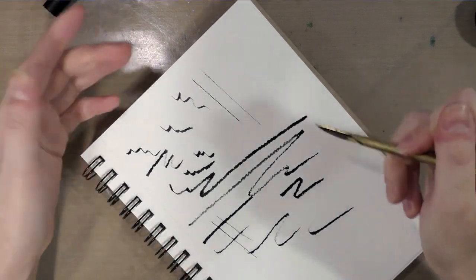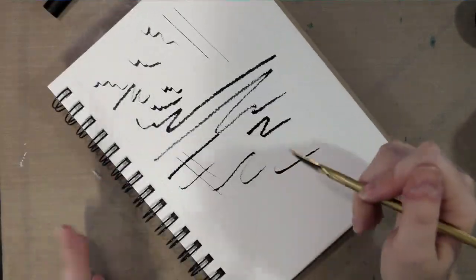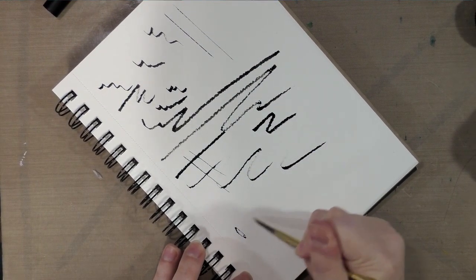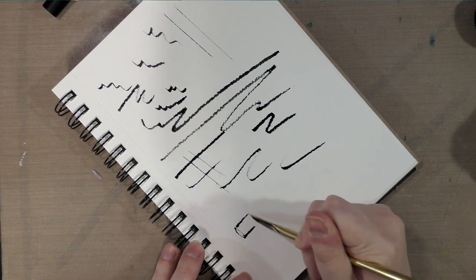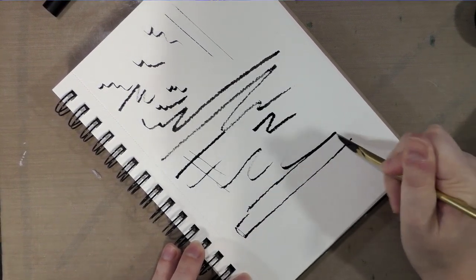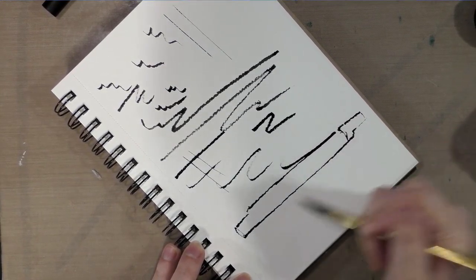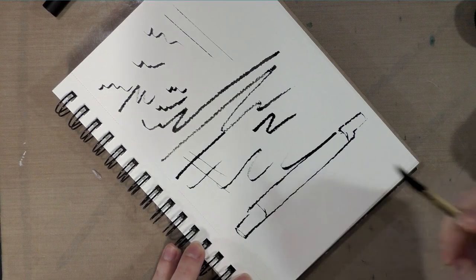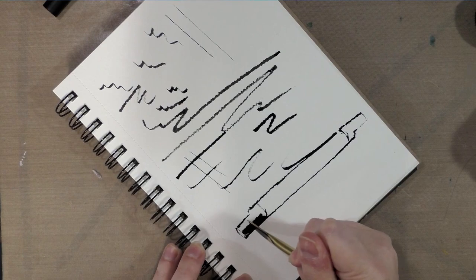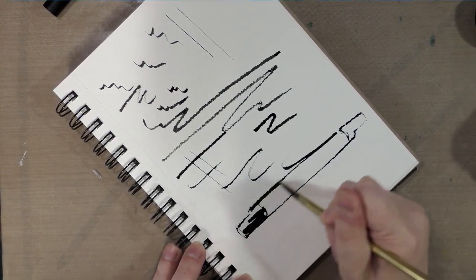So in a way like the Fude de Mannen is a Fude fountain pen, this is sort of like a Fude dip pen. So I'm gonna quickly sketch out something that's on my drafting table which happens to be a Prismacolor marker and this has a really interesting stroke to it.